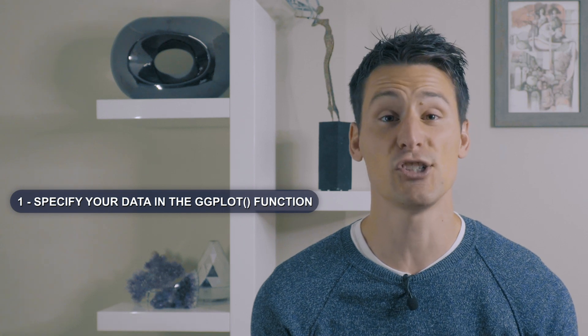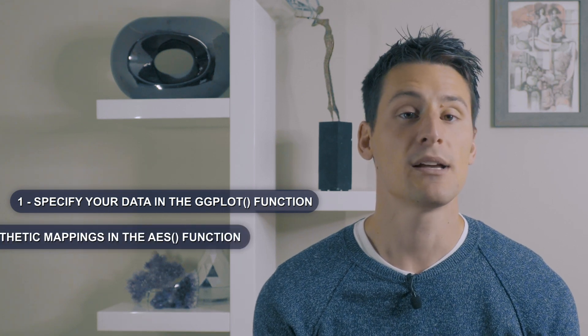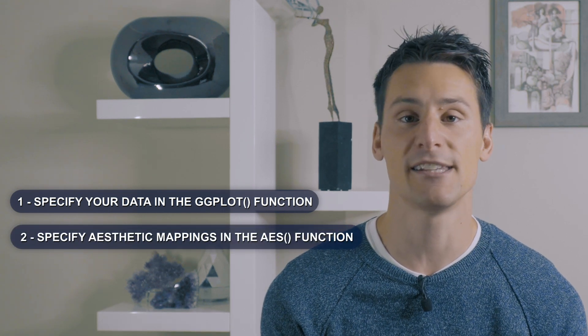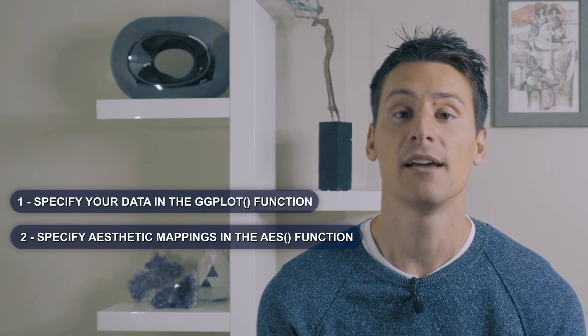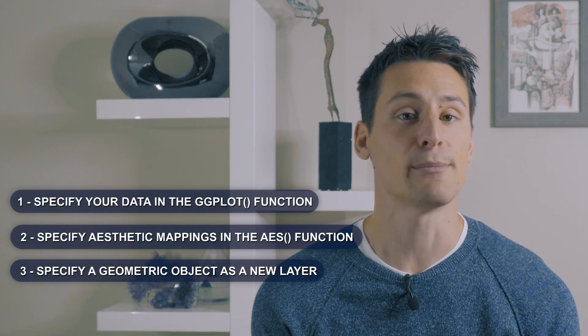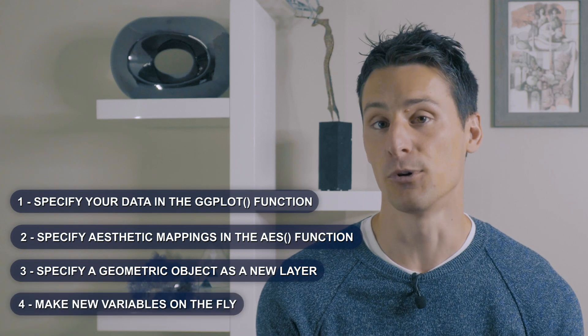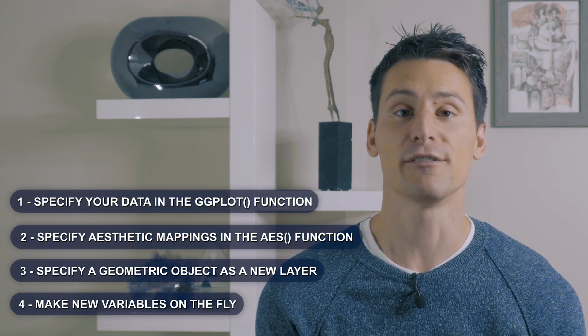So I hope you feel ready to start plotting with ggplot2. When you do, keep four steps in mind: one, specify your data in the ggplot function; two, specify your aesthetic mappings in the aes function; three, specify your geometric objects as a new layer; and four, make new variables on the fly.